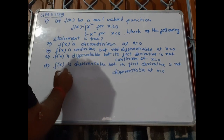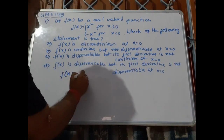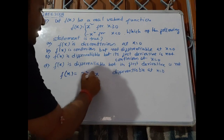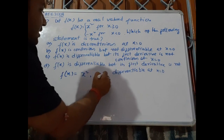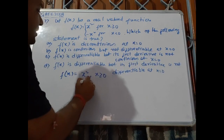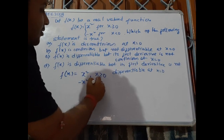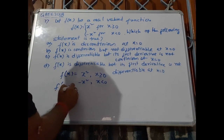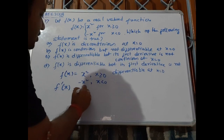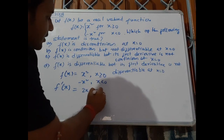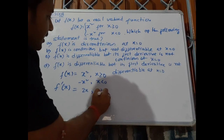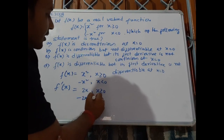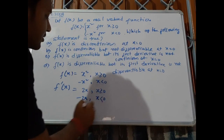We have f(x) equals x squared for x greater than or equal to 0, and minus x squared for x less than 0. Taking the first derivative, f'(x) equals 2x for x greater than or equal to 0, and minus 2x for x less than or equal to 0.